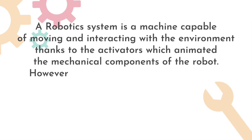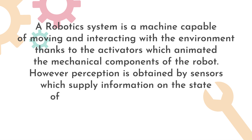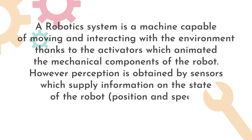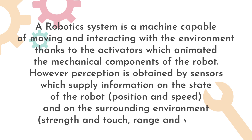Perception is obtained by sensors which supply information on the state of the robot — position and speed — and on the surrounding environment: strength and touch, range, and vision.